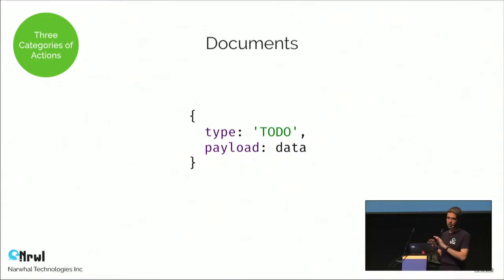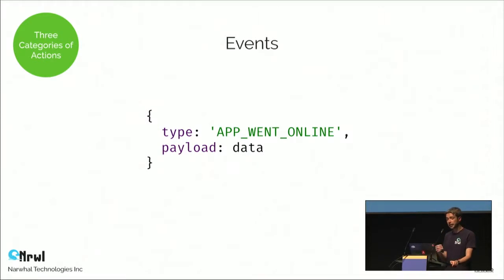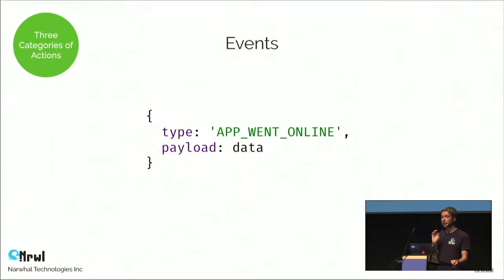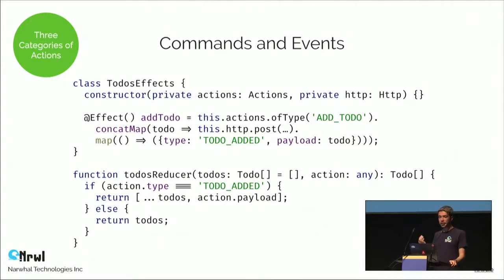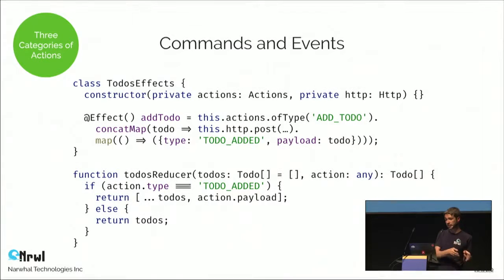Finally, an event tells the system that some change has occurred. Similar to documents, events are often handled by more than one place in the application, and events do not provide a response — it's a fire-and-forget situation. I name events as 'something happened.' Often we need more than one action to implement an interaction. For example, the first thing we dispatch is the add-to-do command, which is handled by the effects class. Once persisted on the back end, the effects class dispatches the to-do-added event, handled by the reducer. One interaction involves both a command and an event.